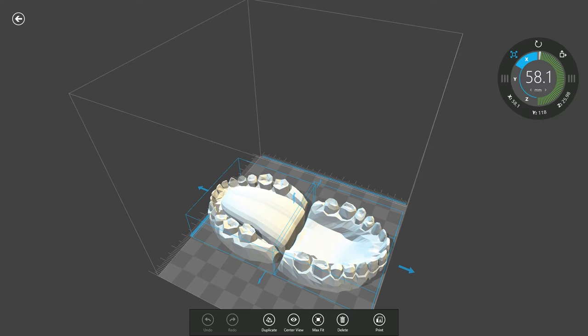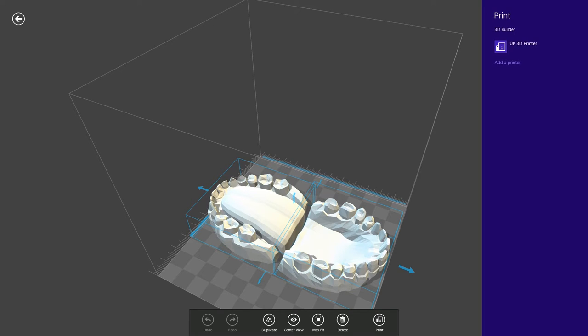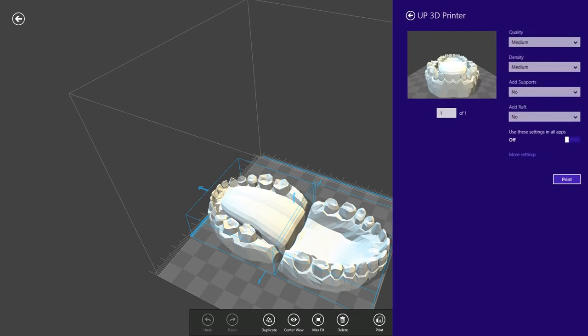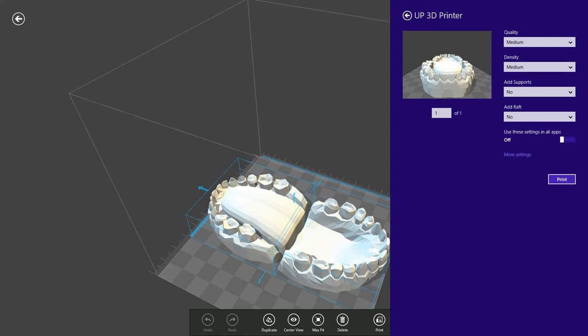All I need to do here is hit the print button. UP 3D printer. That's going to work. We're going to go with medium build quality. I'm going to add a raft so that this is easier to get off of the build platform. Hit print.